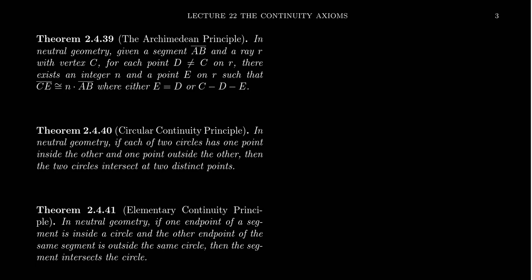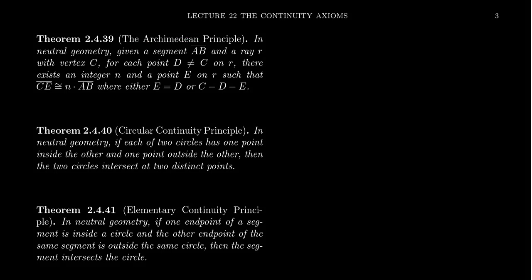Hilbert axiomatized neutral geometry when he was axiomatizing Euclidean geometry. He took two axioms of continuity. His first axiom of continuity is the so-called axiom of Archimedes, listed here as the Archimedean principle. His second axiom of continuity is known as the postulate of line completeness. That rendition was a little more complicated than we wanted to take on, which is why we adopted Dedekind's axiom instead.